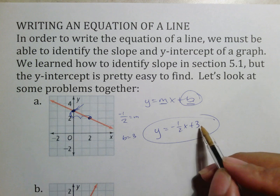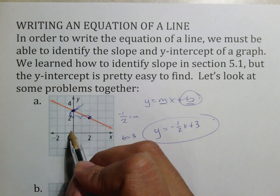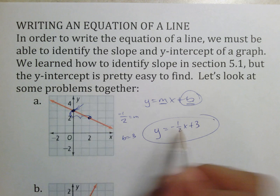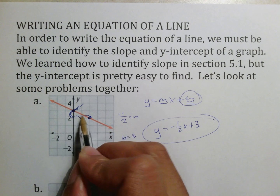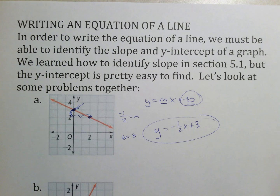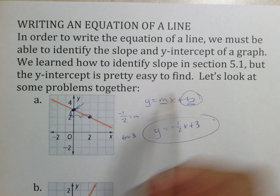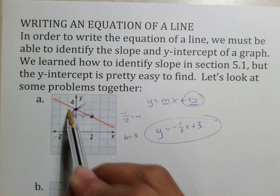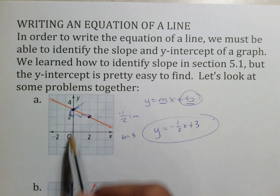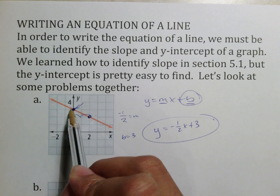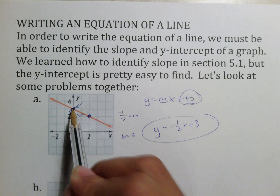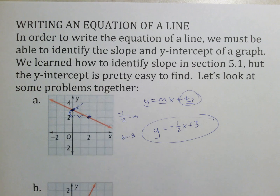To check: b equals 3 means go up 3 on the y-axis — that's correct. Then down 1 over 2 — that's where we ended up. To write an equation from a graph, simply find the slope, find the y-intercept (where the line crosses the y-axis), and put those two things into the equation.